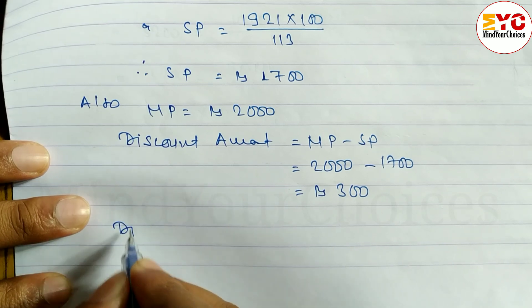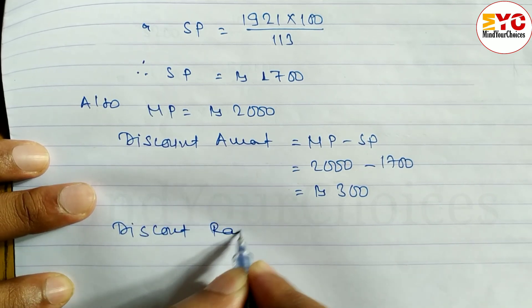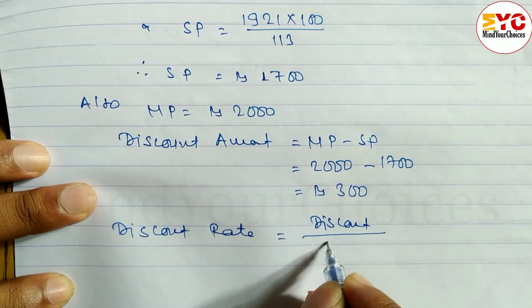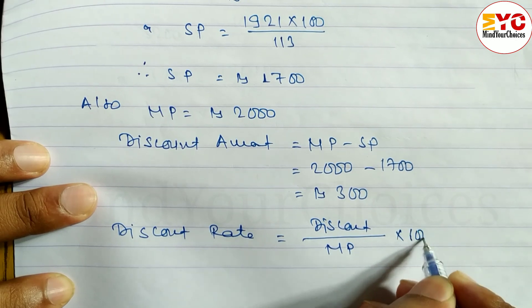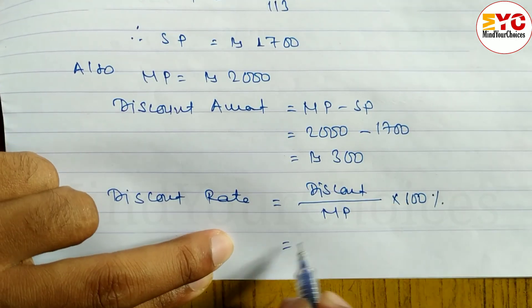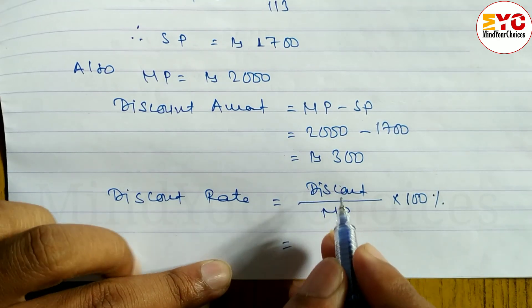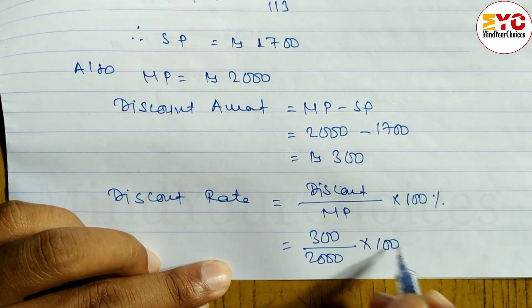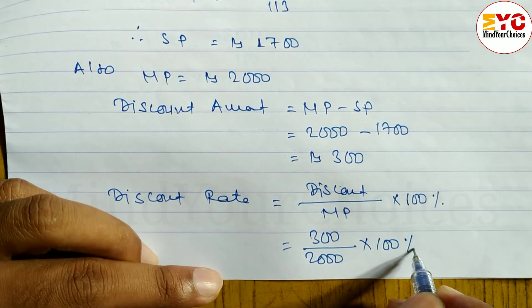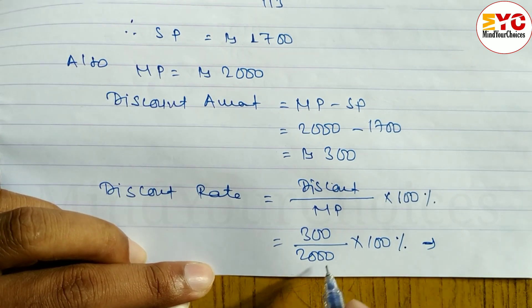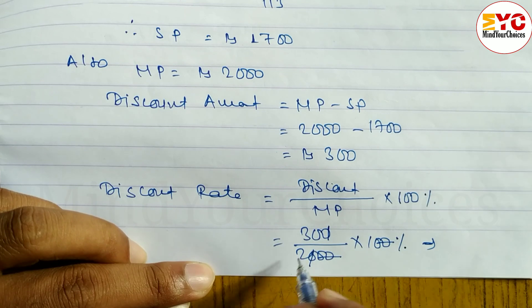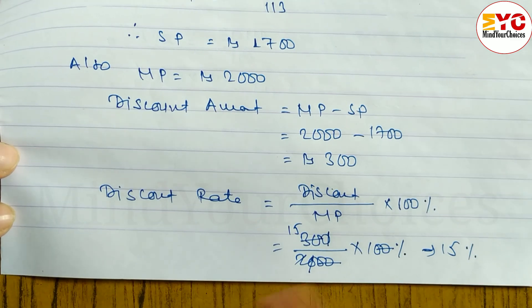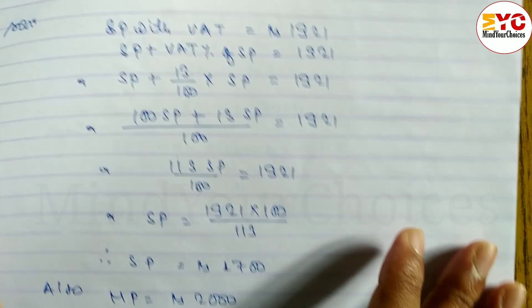After finding the discount amount of Rs. 300, we find the discount rate. The formula for rate of discount is: Discount / MP × 100%. Discount = 300, MP = 2000. So 300 / 2000 × 100% = 15%. Therefore, discount rate = 15%.